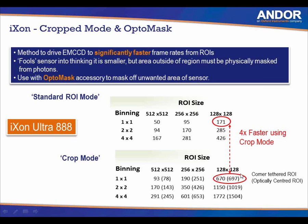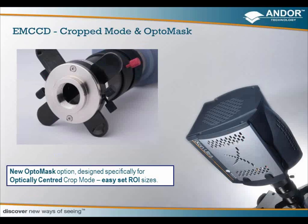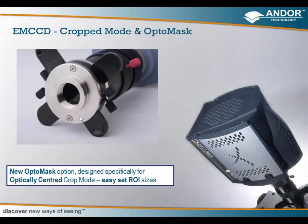The OctoMask has four metal blades that can be adjusted manually. There is also a new OctoMask preset for optically centered modes, with four predefined regions of interest set on the OctoMask itself — no manual adjustment needed; they simply click into place. These can be used on both the iXon Ultra 888 and the 897 to give much faster frame rates.